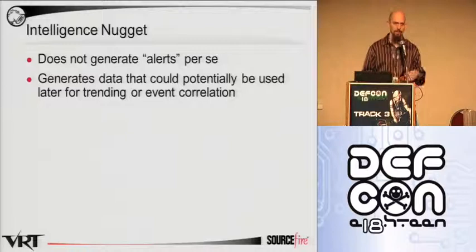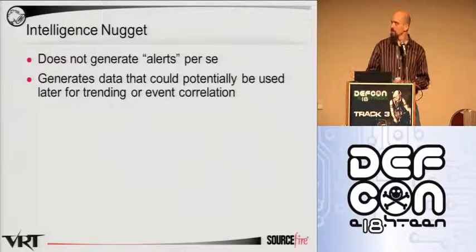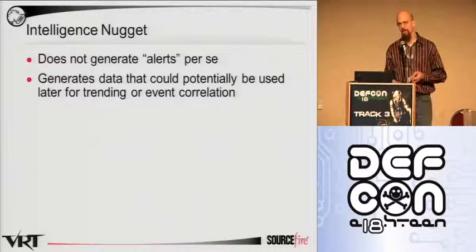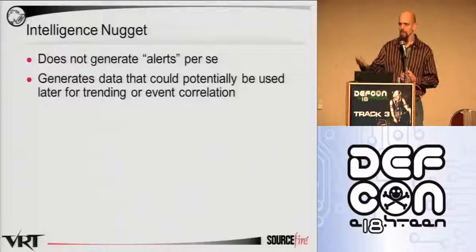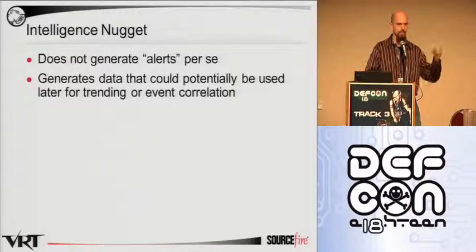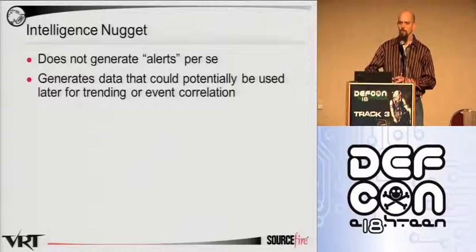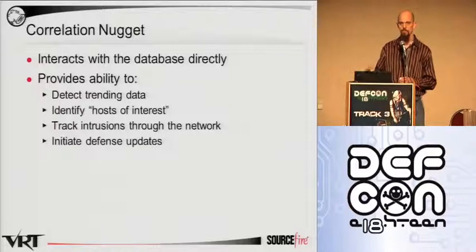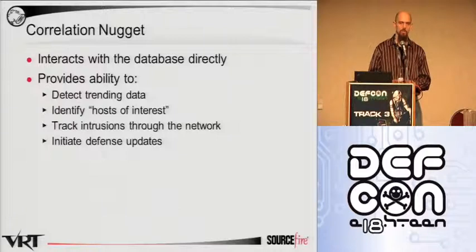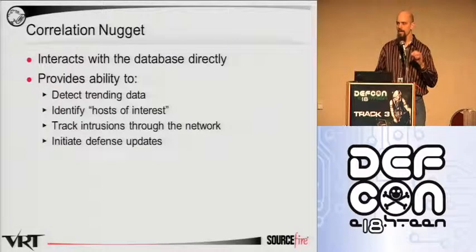Not every nugget is simply catching bad people doing bad things on the internet. We also have intelligence nuggets, which are nuggets that provide data not necessarily of an alert nature. For example, you can have DNS queries stored. By storing all these DNS queries and seeing that an infected host goes out to various hosts as part of embedding itself in your network, you can take a correlation nugget and see that other hosts are performing that same activity. So even though you missed the original compromise, when you see another host performing the same exact activities, you can infer that something bad is going on and proceed with cleanup.